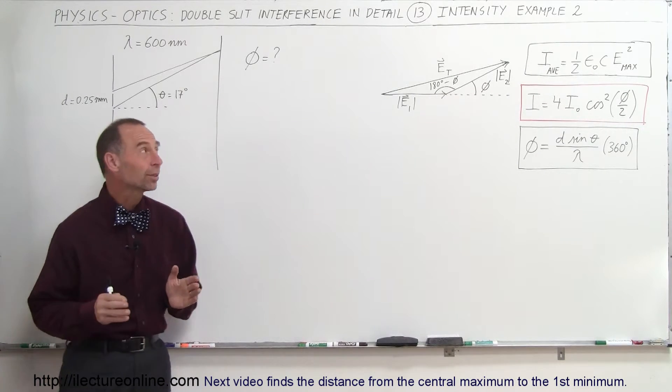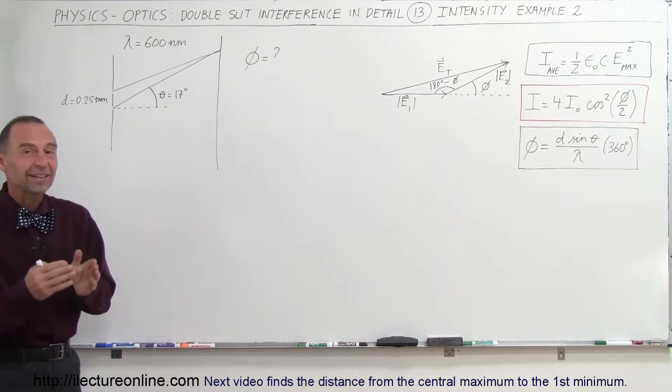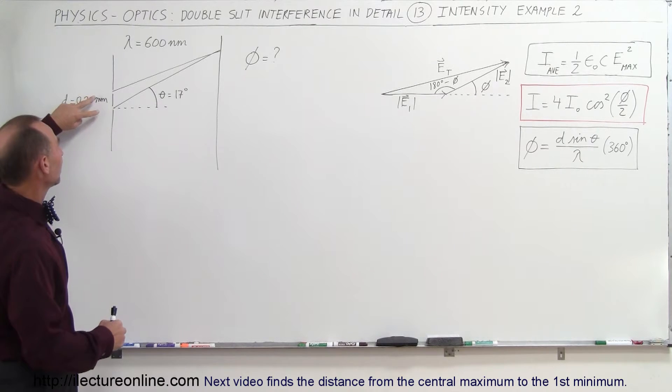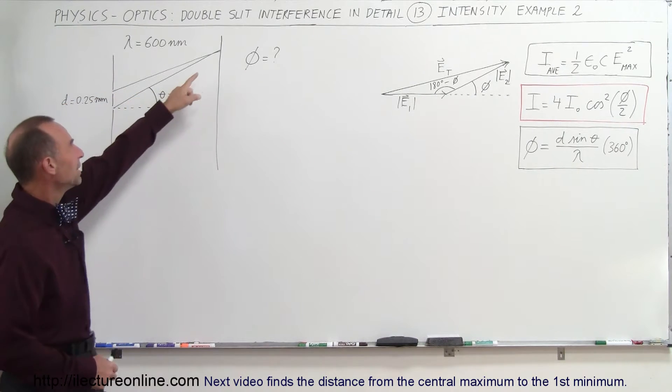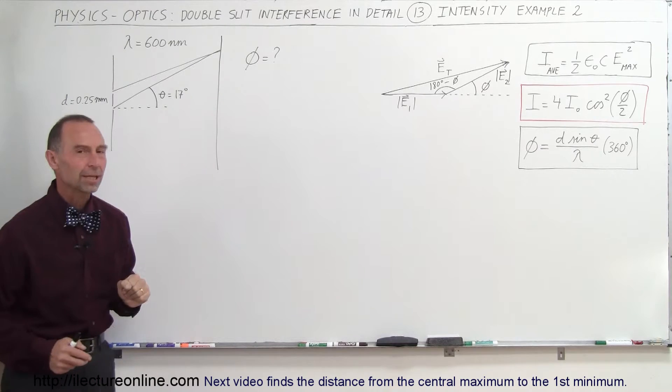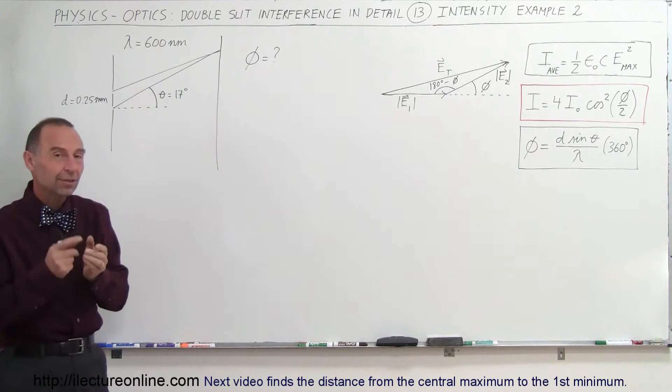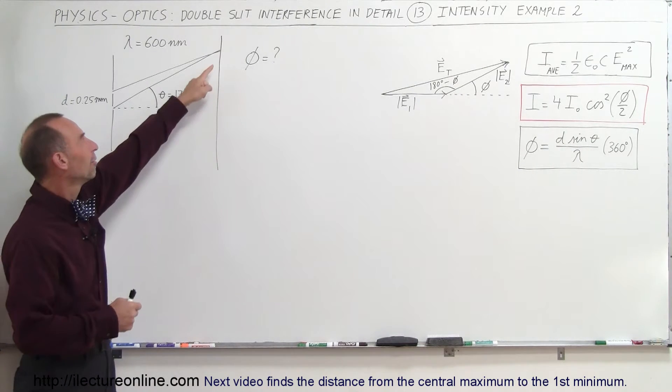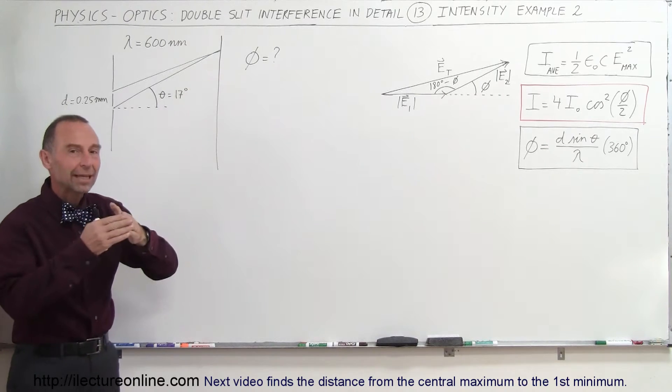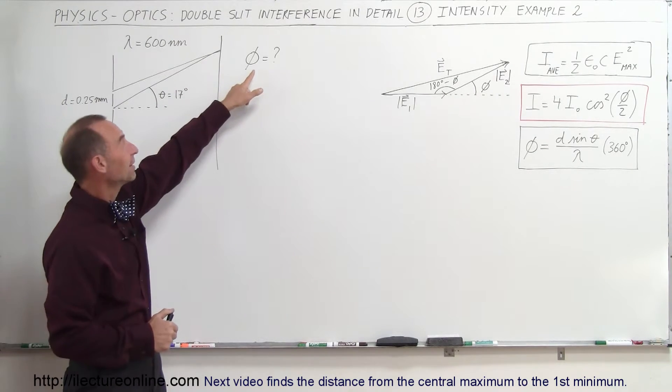Welcome to ElectronLine and now we're going to take a look at an example that helps us find the phase difference between two rays coming through a double slit and meeting at some point further away at the screen. Remember that the ability to find the intensity of the two rays when they come together depends upon us being able to find the phase difference.